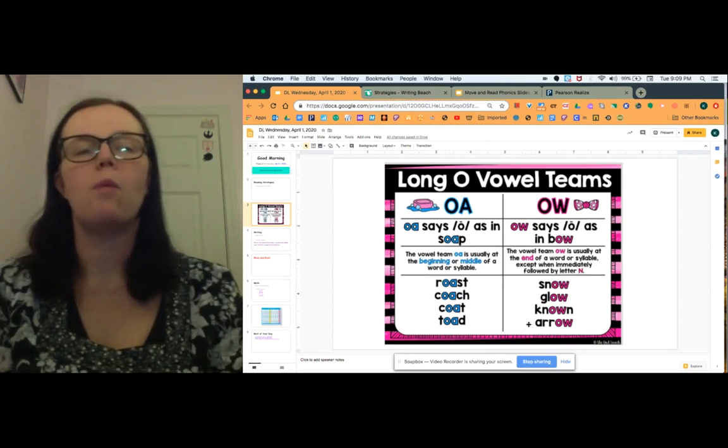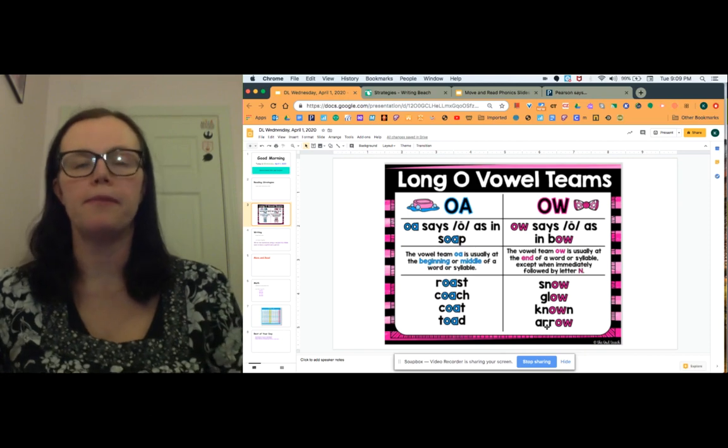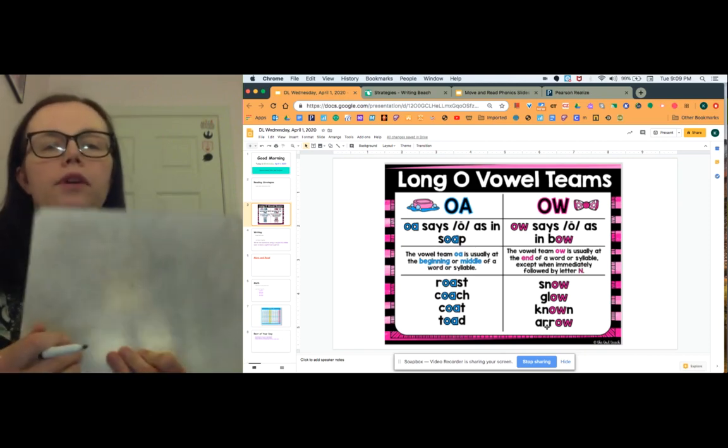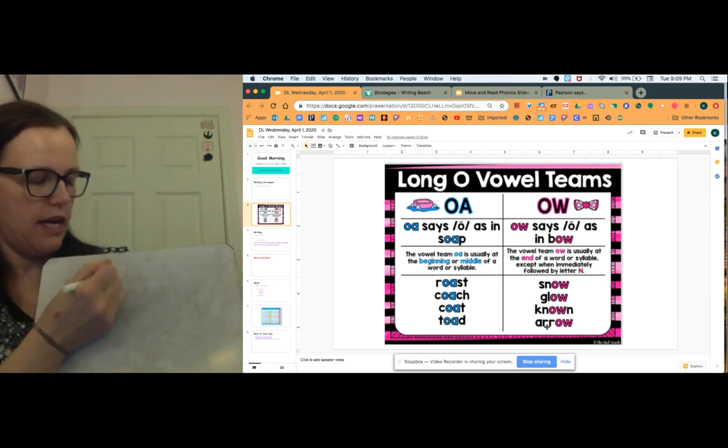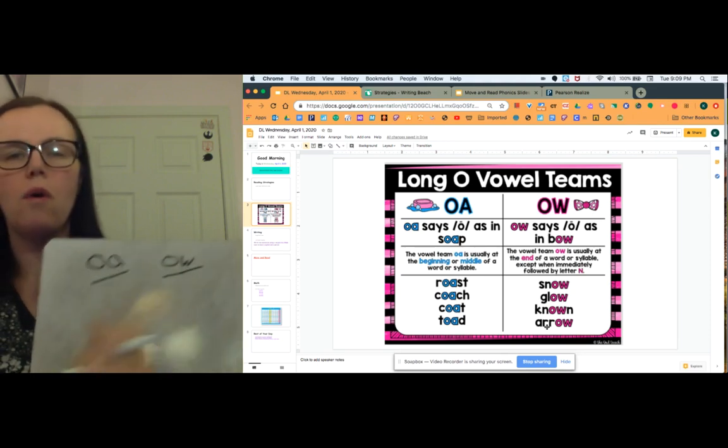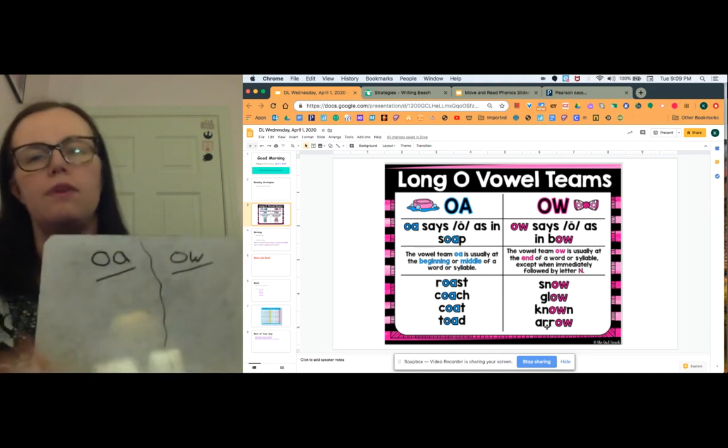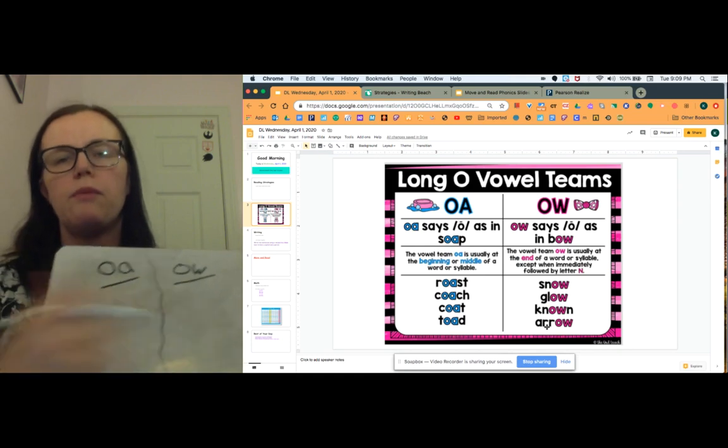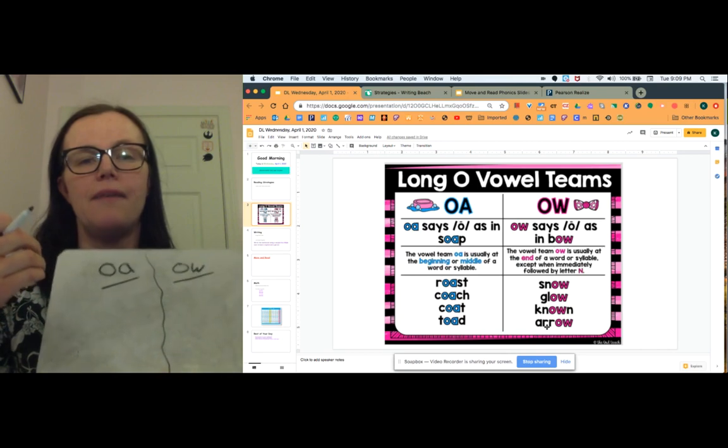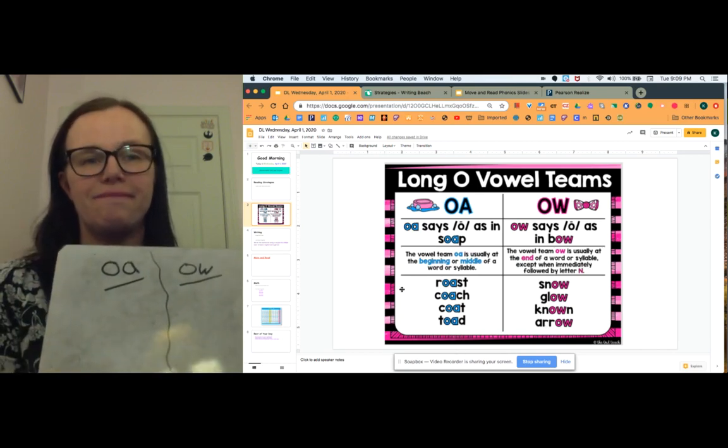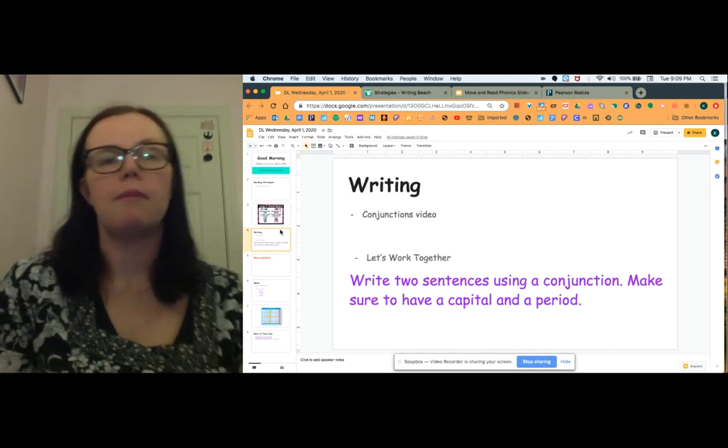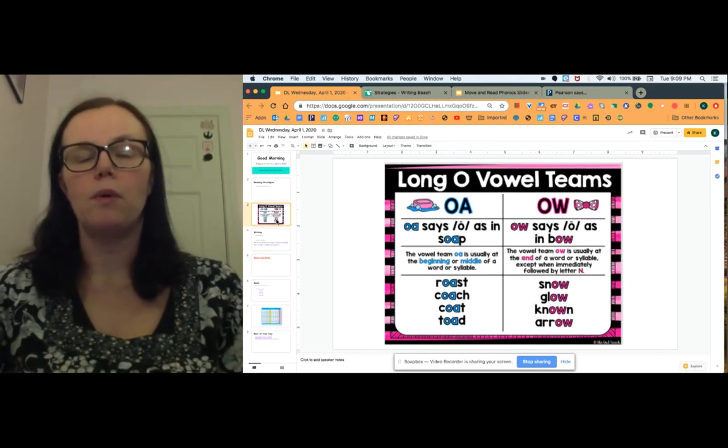So what I want you to do is I want you to go grab a piece of paper. And I want you to think about some of your own OA, OW, O words. And I want you to see if you can come up with two or three words for each list and then show a family member. And when you're ready, you can come back and unpause the video. Okay, so hopefully you were able to come up with quite a few words for your long O sounds.